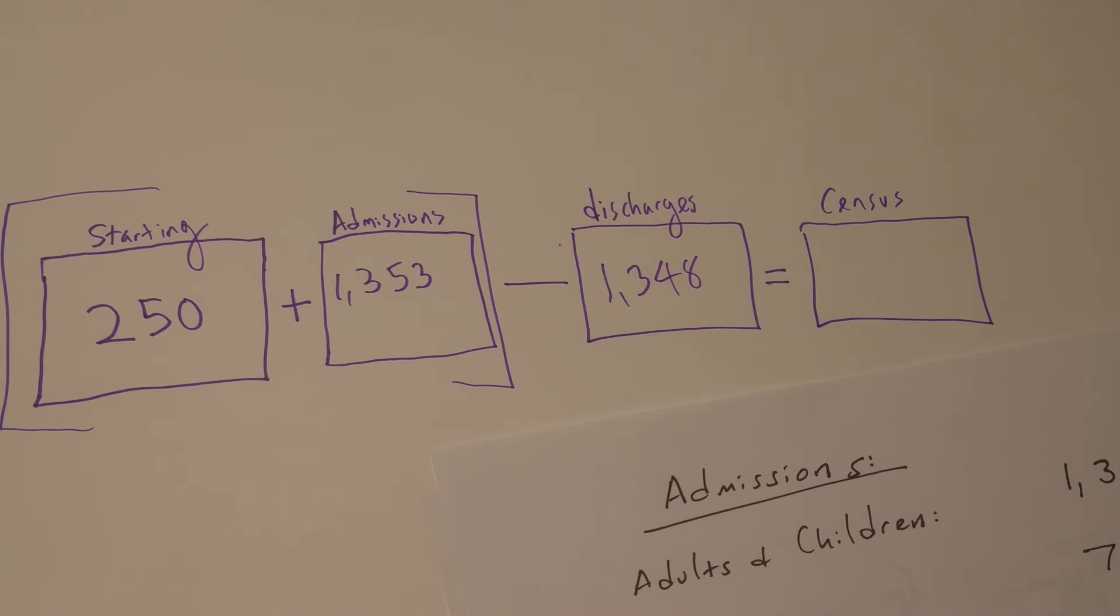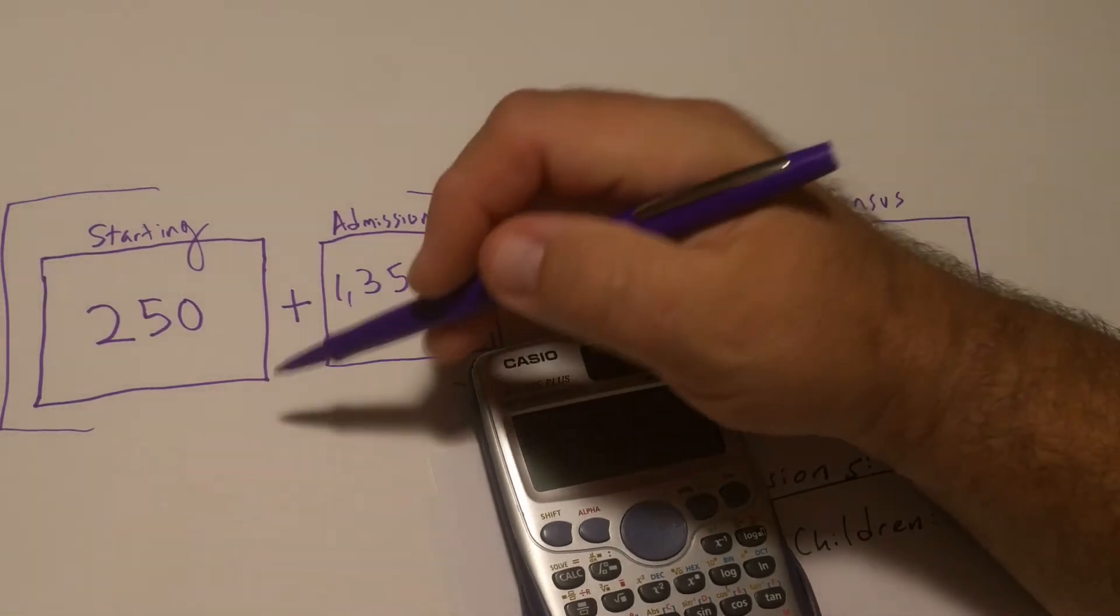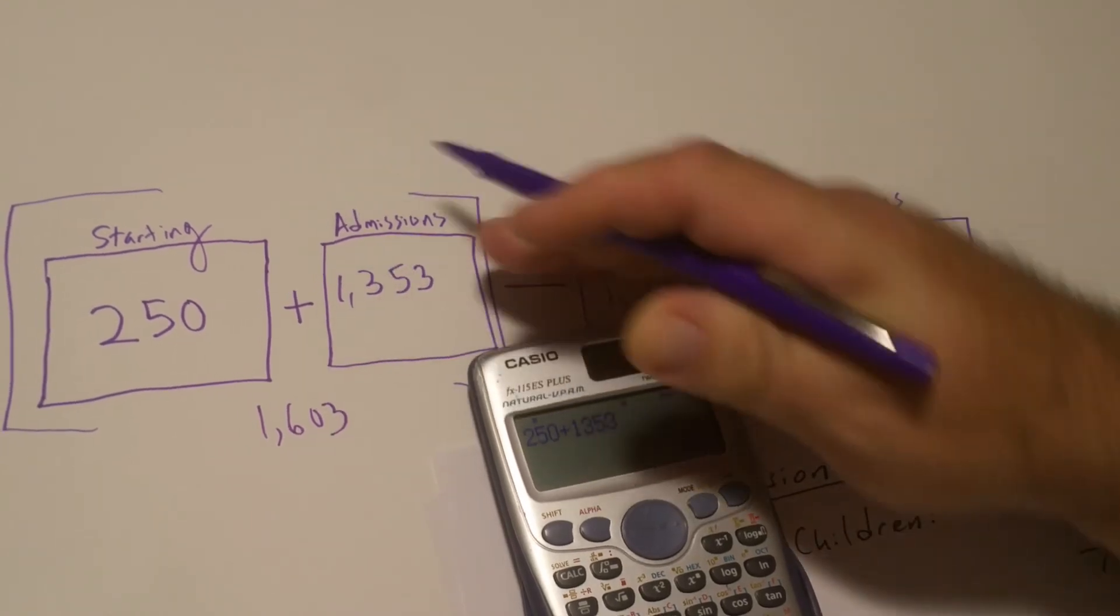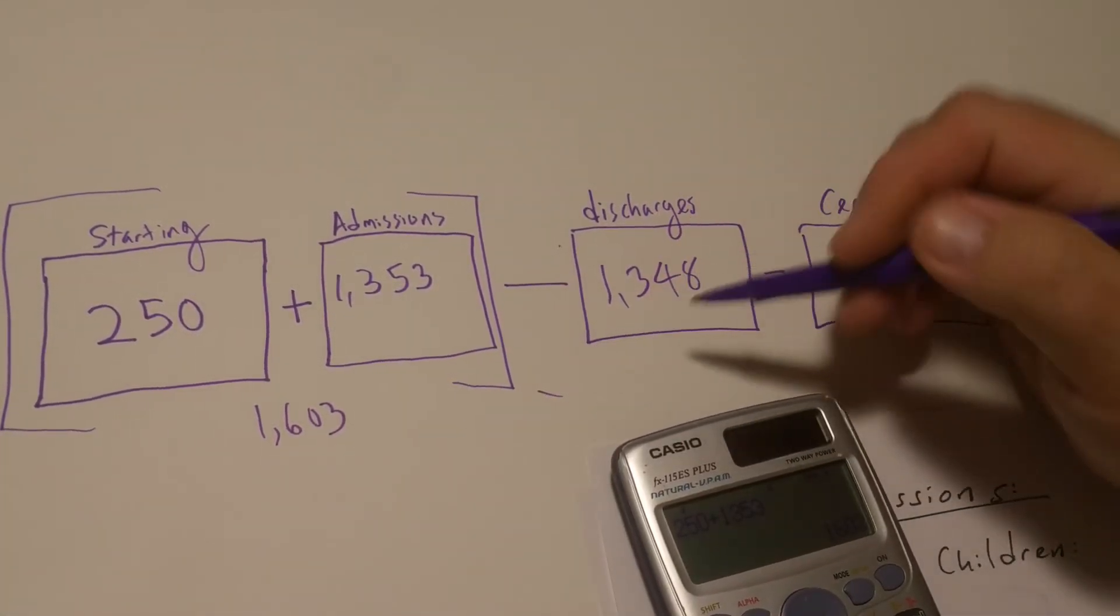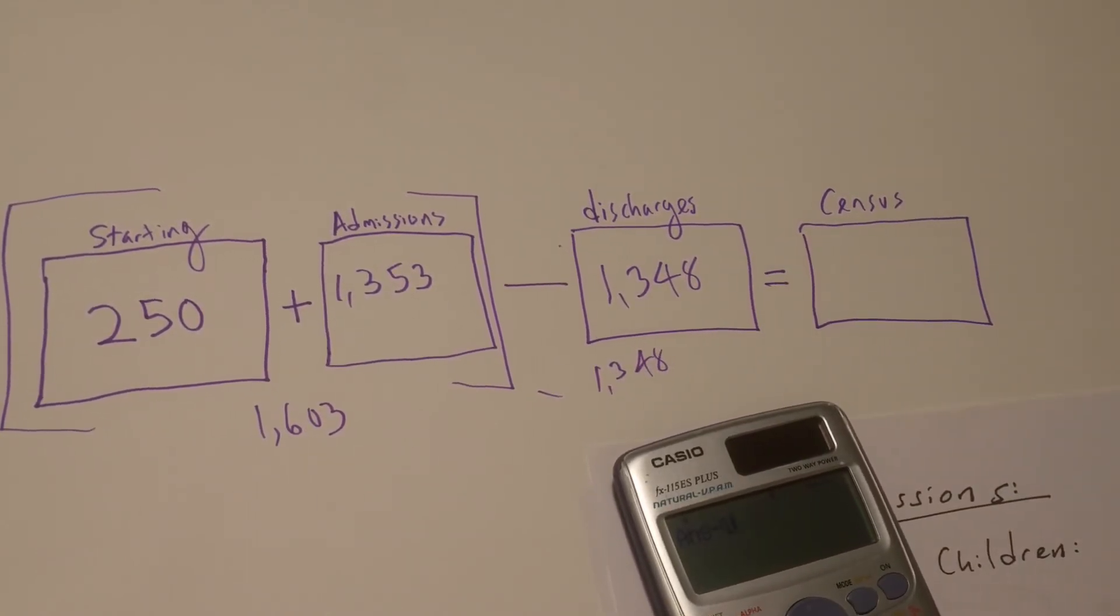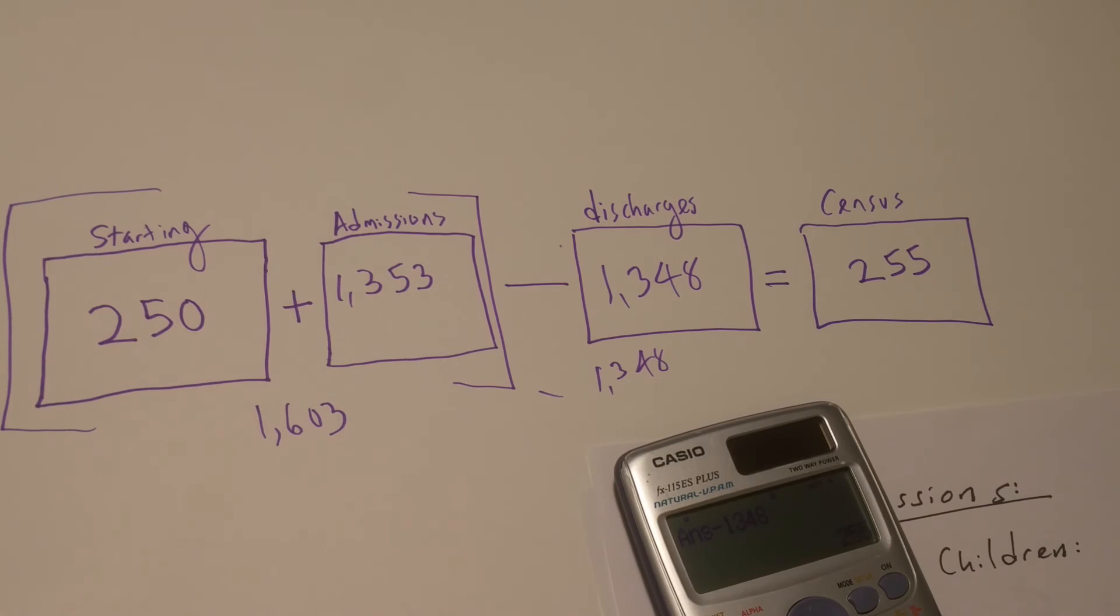So, if I take those numbers, and I can punch them into my calculator. I have 250. I add 1,353. That's 1,603. I'm going to subtract from that 1,348. And that's going to give me an ultimate census on the 31st of adults and children of 255.